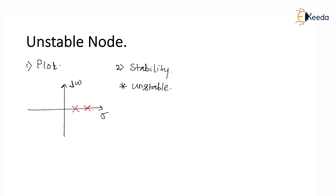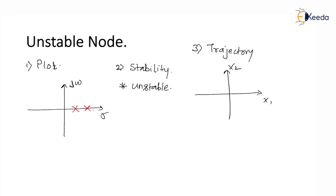Since it is unstable in nature, all the trajectories of an unstable node are going to diverge away from the origin towards some other point — they are not going to merge towards the origin. Point number three: trajectory. In the x1-x2 plane, the trajectories are going to diverge away from the origin. This is how the trajectory of an unstable node looks like, drawn with respect to the x1-x2 axis.